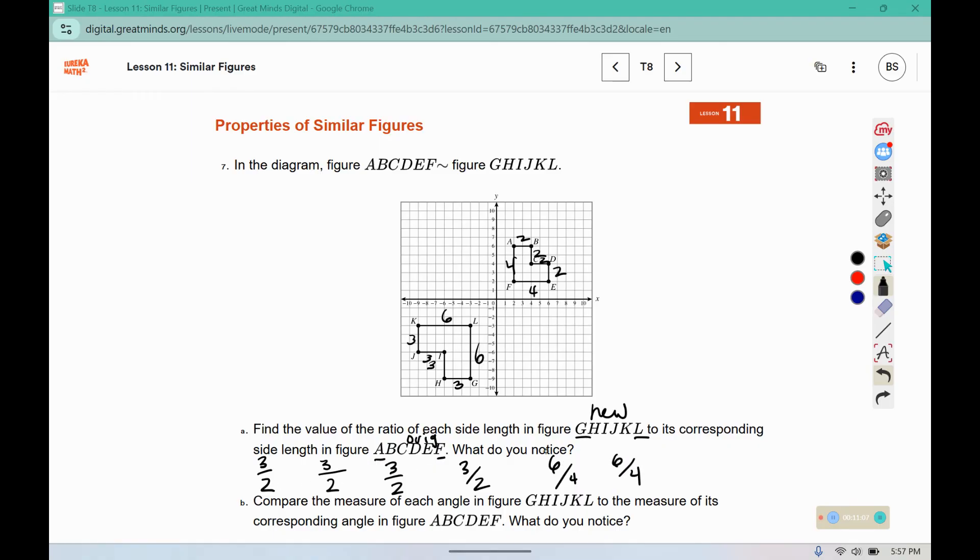So what do you notice? If we were to reduce 6 over 4, we can divide both of those by 2. So they are all equivalent. These are equivalent fractions to 3 over 2, it's just in its reduced form. So 3 over 2 must be the scale factor.